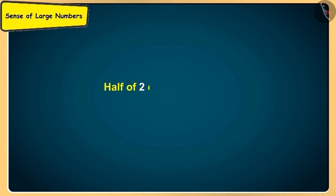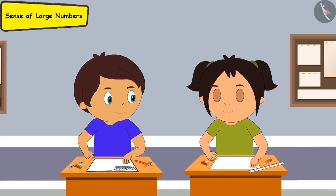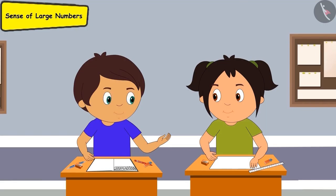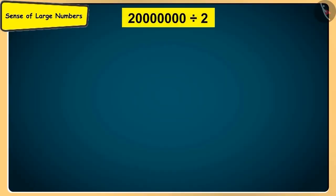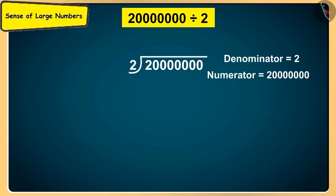The total population is two crores. Half of this will be one crore. But Didi, how did this happen? Half of two crores means if we divide it into two equal halves by dividing it by two, which means two will be the denominator and two crores will be the numerator. Now the first number of the numerator is two and the denominator is also two.